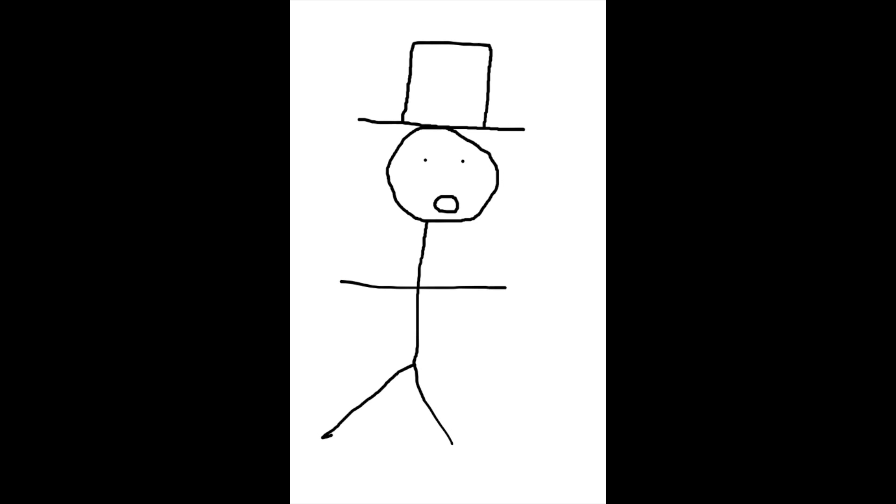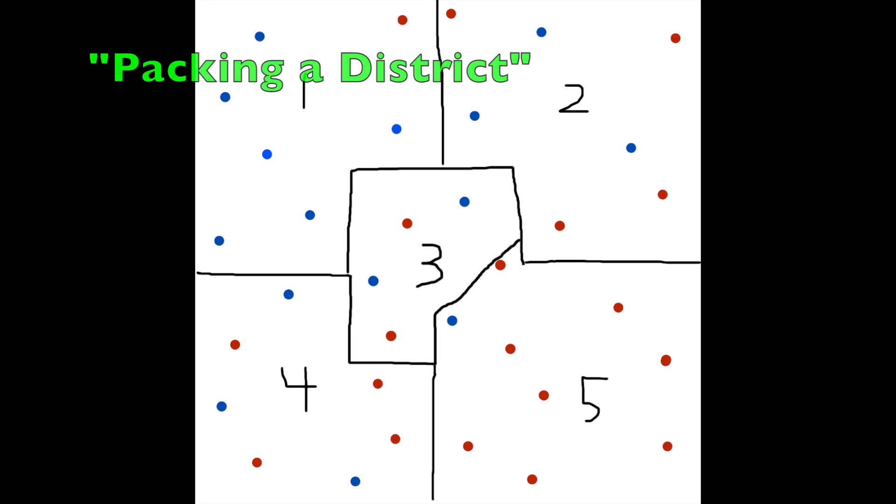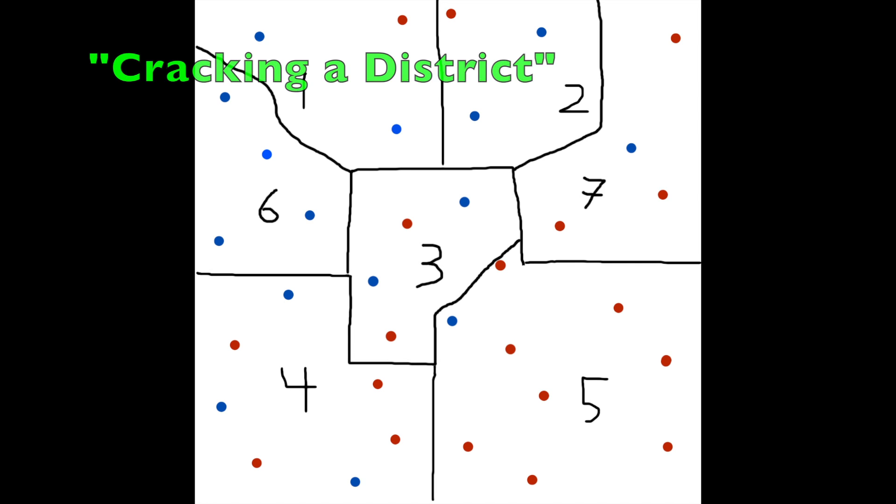But our man has other plans to help the blue party win the election. He decides to pack the district by crowding as many opponent voters into a single large district. In this example, the districts are 3-1 for the red party instead of 4-1. Our man now cracks two of the districts where the blue party has a very large supportance. Now there are 7 districts with blue to win 4-3 even though the red party had more voters.